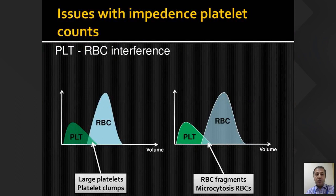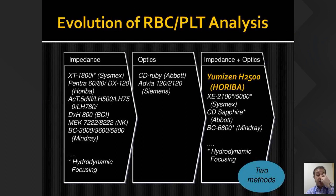Platelets and RBCs are counted in the same RBC-platelet channel, so there will be overlap between RBCs and platelets whenever there are smaller RBCs or larger platelets — that's when counts become relatively unreliable. This is where the importance of new analyzers comes into the picture. There has been evolution from impedance to inclusion of optics, and eventually combination of impedance and optics in some analyzers, giving dual platform methodology for the best possible platelet count.